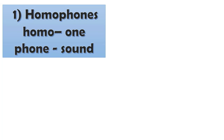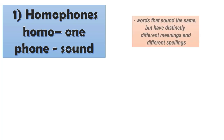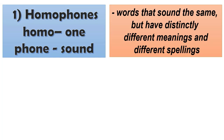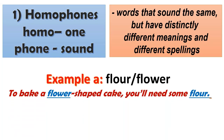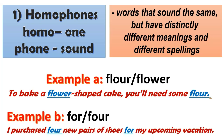Homophones: 'homo' means one and 'phone' means sound. Homophones are words that have almost the same or exactly the same sound, but have different meanings and different spellings. Example: 'To bake a flower-shaped cake, you'll need some flour.' Another example: 'I purchased four new pairs of shoes for my upcoming vacation.'